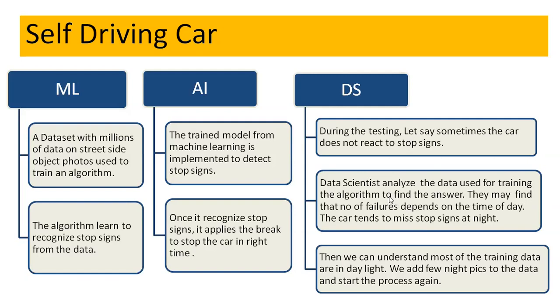Let us understand how machine learning, artificial intelligence, and data science work together using the example of a self-driving car. A self-driving car is an AI application. Let us say we are working to make the car stop at signals. In machine learning, a dataset with millions of street-side object photos is used to train an algorithm, and the algorithm learns to recognize stop signals. In AI, the trained model from machine learning is implemented to detect stop signs — once it recognizes a stop sign, it applies the brake to stop the car in time.